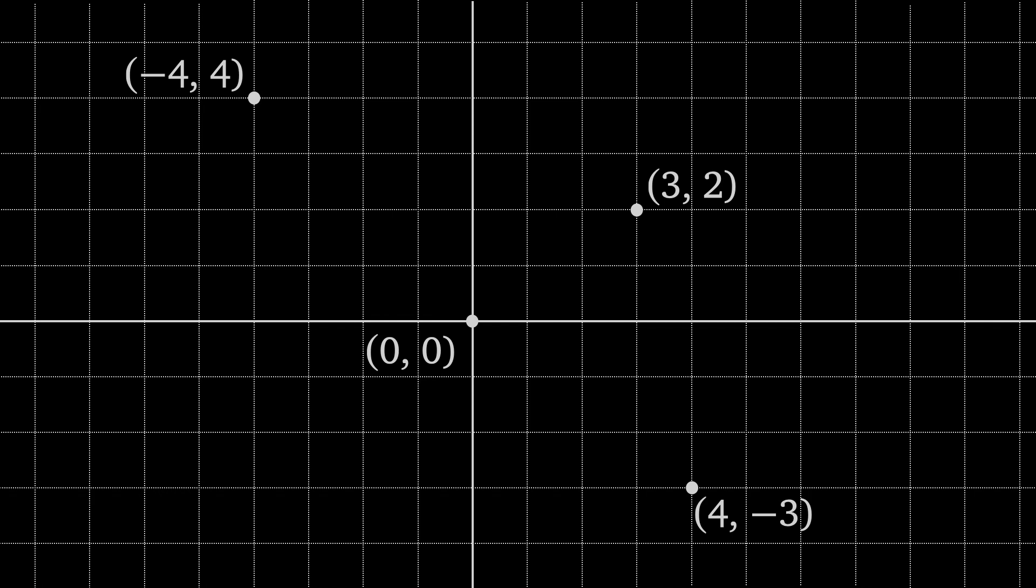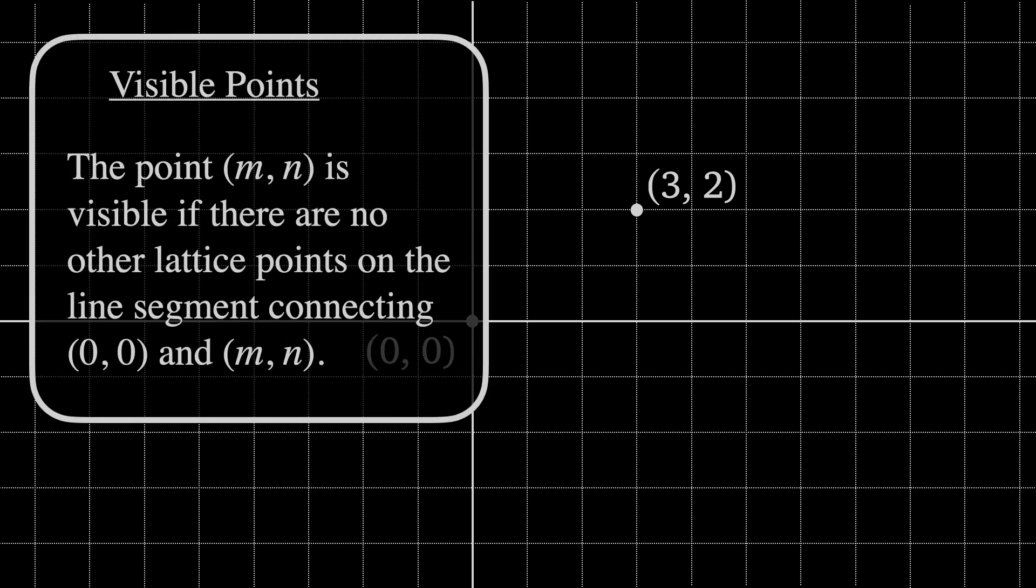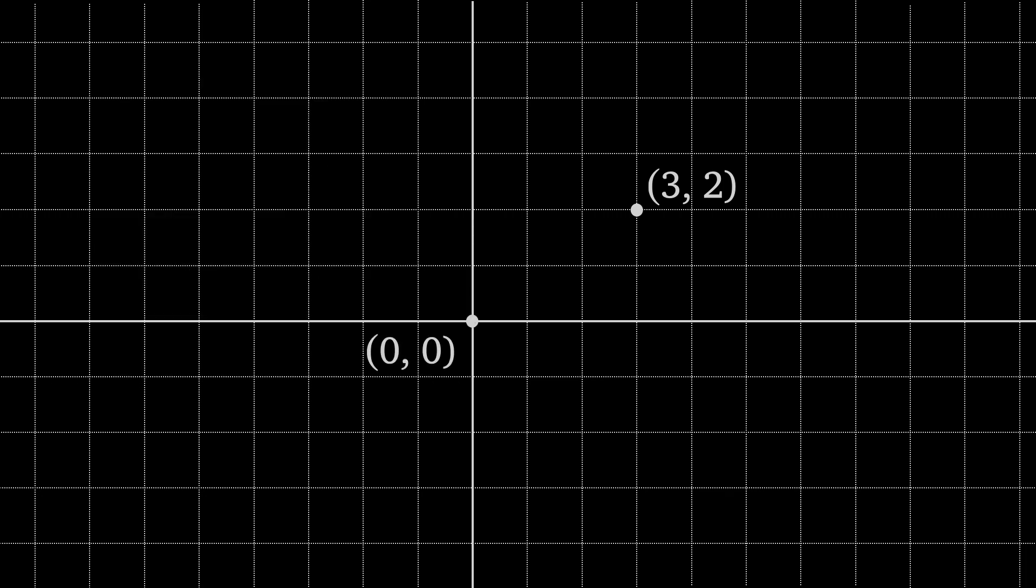In this video, I want to talk about visible points on the integer lattice. We say the point MN is visible if there are no other lattice points on the line segment connecting 00 and MN. The point 32 is therefore a visible point since the line from 00 to 32 doesn't pass through another lattice point. The point 22 is not a visible lattice point since the line from 00 to 22 passes through the point 11.